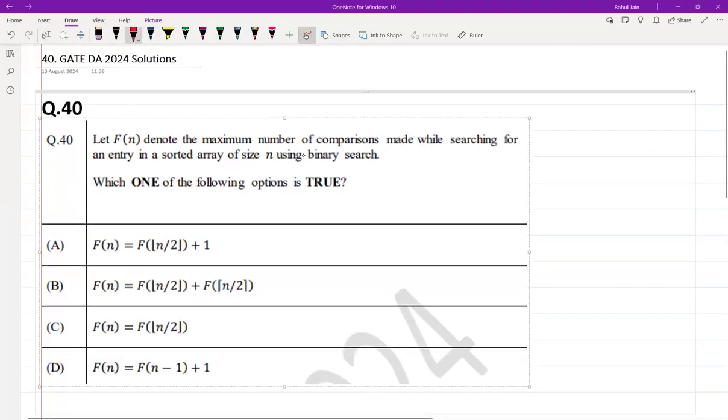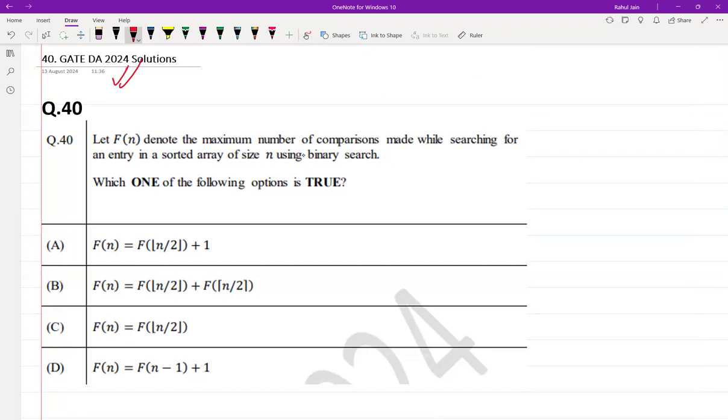The following question was asked in GATE DA 2024. The question is: let F(n) denote the maximum number of comparisons made while searching for an entry in a sorted array of size n using binary search. Then which one of the following options is true?